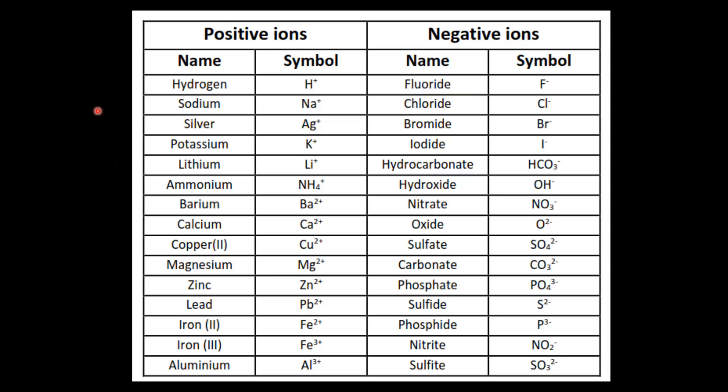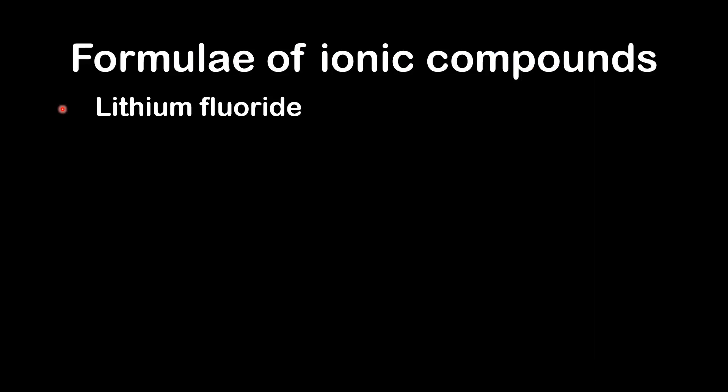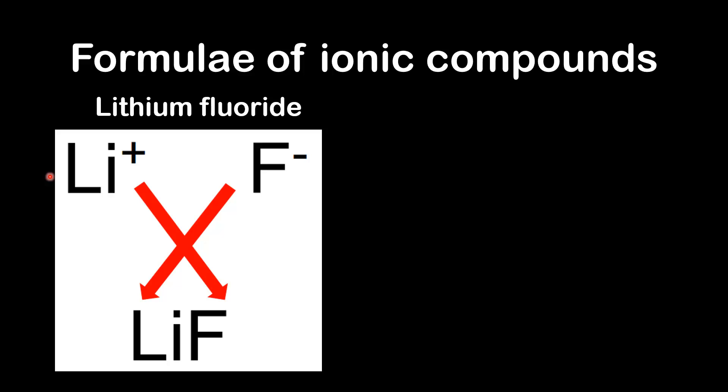If you don't have a copy of this ion chart, I've included a copy in the worksheet that accompanies this video. So let's try our first example, writing the formula for lithium fluoride. I'm going to show you how to use the crossover technique. You start by writing the formula of the ions at the top. Lithium forms a 1 plus ion, so we write Li+. And the fluoride ion is a 1 negative ion, so we write F-.